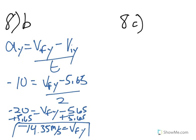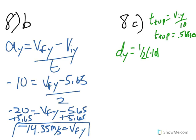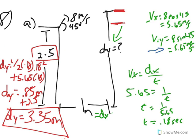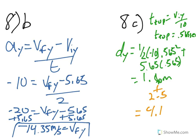8C asks how high does the ping pong ball go. First find the time to the top: t top equals viy divided by 10, so 5.65 divided by 10, which is 0.565 seconds. Then plug into dy: dy equals one half times negative 10 times 0.565 squared plus 5.65 times 0.565, which gives 1.6 meters. Then add the 2.5 meters starting height again, giving a final answer of 4.1 meters.